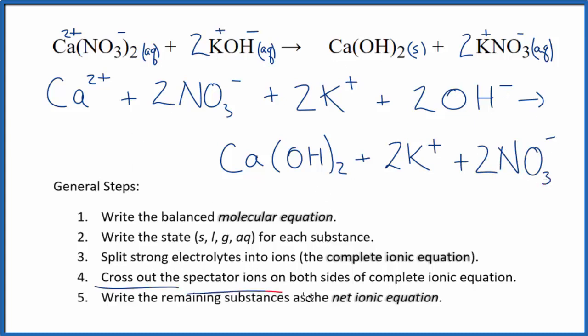Now we cross out those spectator ions. They're on both sides. So I can see in the reactants here, 2 nitrate ions. Also in the products, spectator ions. Cross them out.